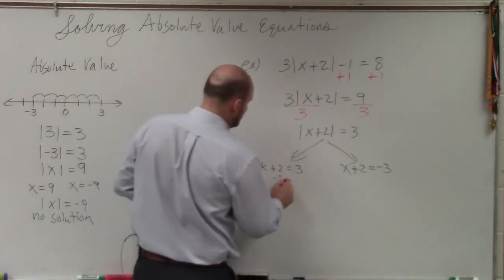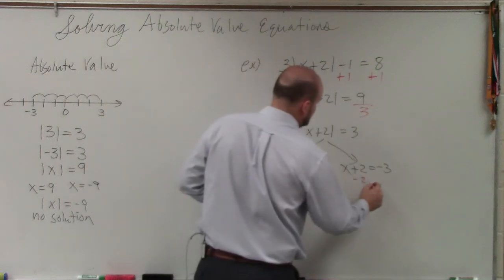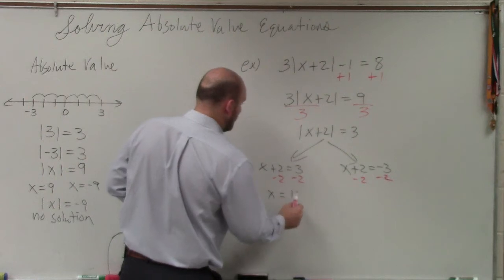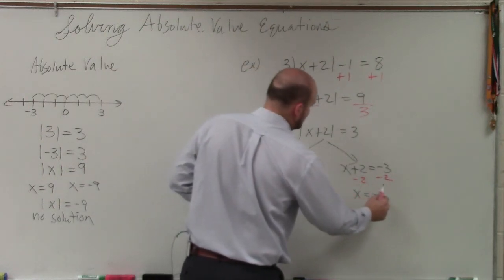Then we just go ahead and solve. Negative 2, negative 2. Subtract 2, subtract 2. And we have x equals 1 and x equals negative 5.